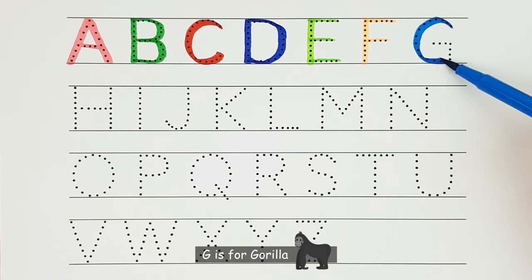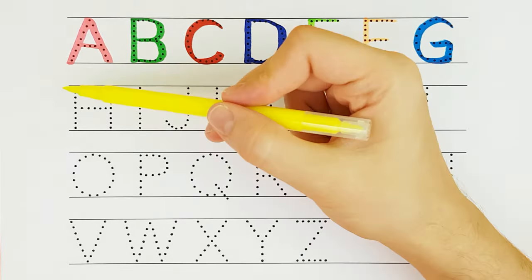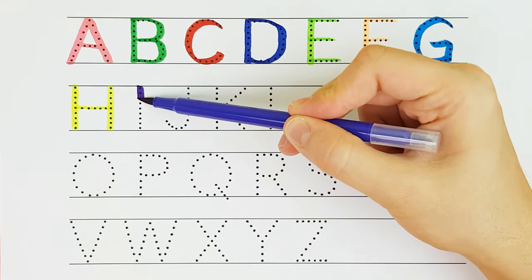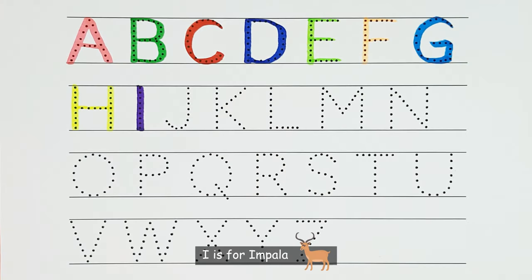G. G is for Gorilla. G. H. H is for Hippopotamus. H. I. I is for Impala. I.